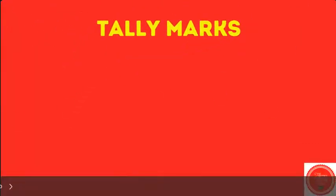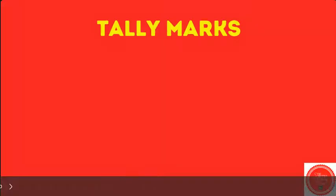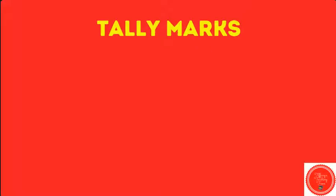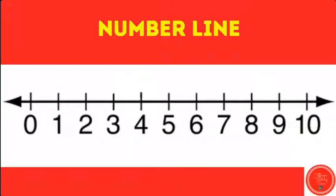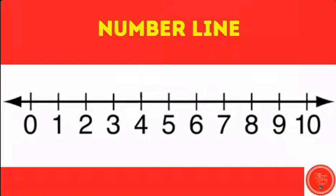Tally marks. Where can we find two on the number line? Two is right here. It comes after one and before three.